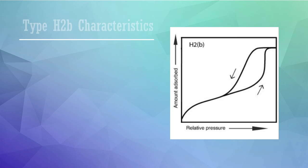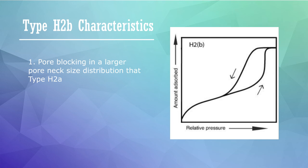Meanwhile, if the desorption branch is steep, like in type H2B, it indicates pore blocking in a larger pore neck size distribution than with type H2A.